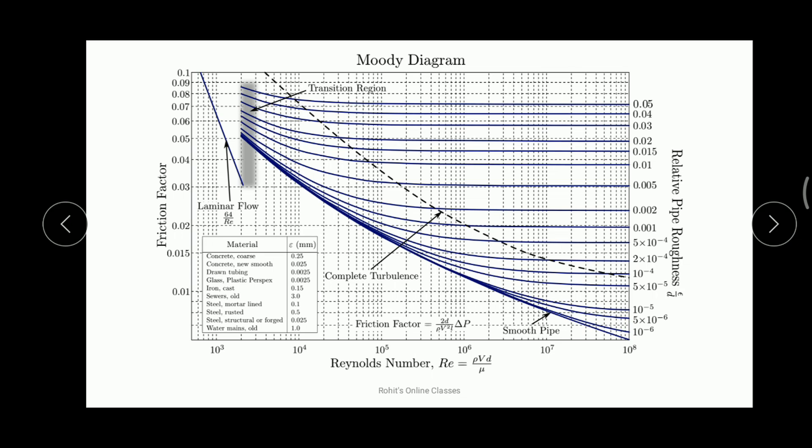To avoid mistakes when solving problems, we can use Moody's diagram. Within a glance, you can easily find the friction factor, the Reynolds number, and the relative pipe roughness. When the flow is laminar, if the Reynolds number lies from zero to the first dotted line, this region represents laminar flow.